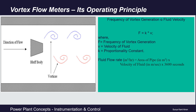Here F is the frequency of vortex generation, V is the velocity of the fluid, and K is a proportionality constant. Once we measure this fluid velocity, the fluid flow rate can be easily calculated because fluid flow rate equals the cross-sectional area of the pipe multiplied by the velocity.